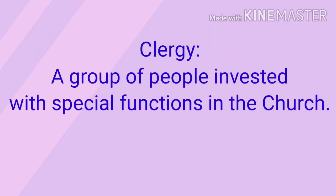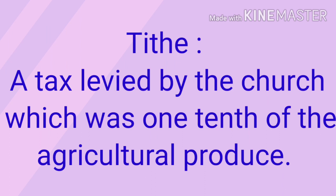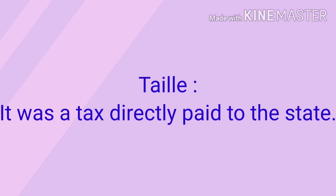Clergy: It was a group of people invested with special functions in the church. As you learned in the first video, the Society of France was divided into three estates and the first estate was also known as the clergy. The second term is Tithe: it was a tax levied by the church, which was one-tenth of the agricultural produce. Next is Taille: it was also a tax to be paid directly to the state.